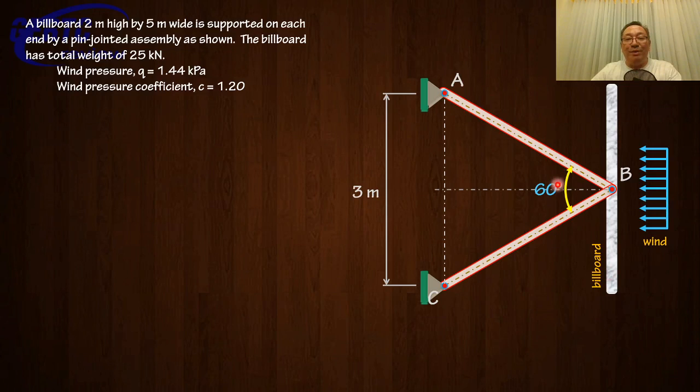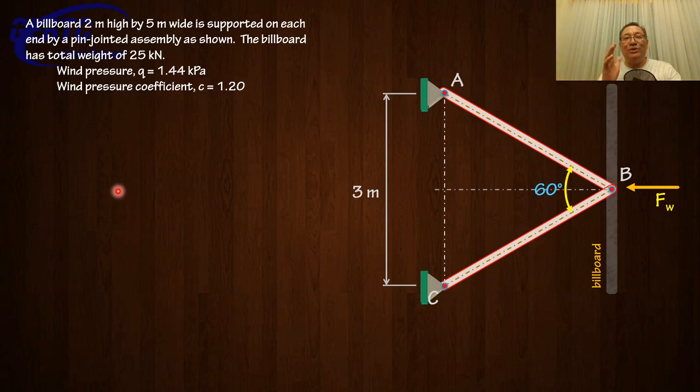So first, we compute the force exerted by the wind and the weight of the billboard. There is no weight given for members AB and BC, so we neglect their weights — only the billboard weight and the wind pressure on the billboard are considered. Let me first show you the solution that most students who got the wrong answer would do.